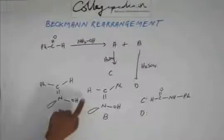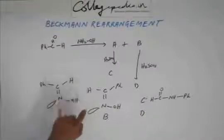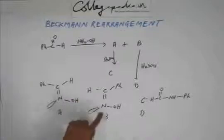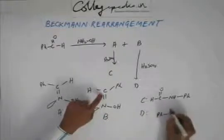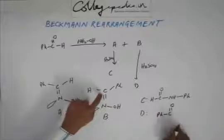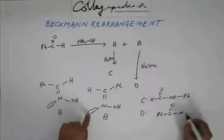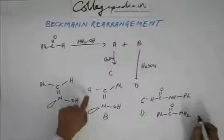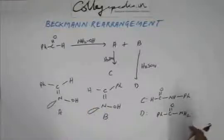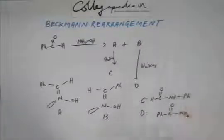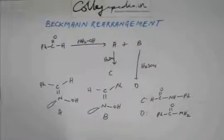Similarly for D: in this case, hydrogen is migrating, so hydrogen will be attached to nitrogen. This carbon is attached with phenyl. C double bond O is going to develop on this carbon after tautomerism, then nitrogen. This hydrogen migrates, and one more hydrogen in the step of tautomerism comes here. So this is going to be a non-substituted amide, and the other is a substituted amide.